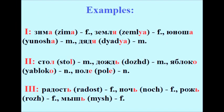Examples: зима (winter), земля (earth), юноша (young man), дядя (uncle) — first declension. Стол (table), дождь (rain), яблоко (apple), поле (field) — second declension. Радость (joy), ночь, рожь, мышь (mouse) — third declension.